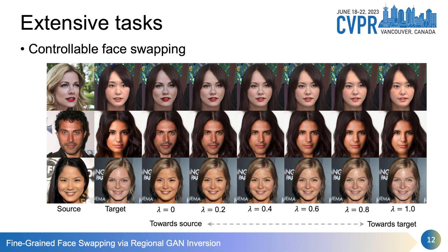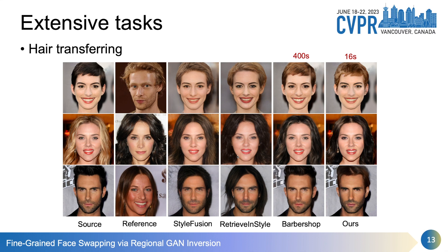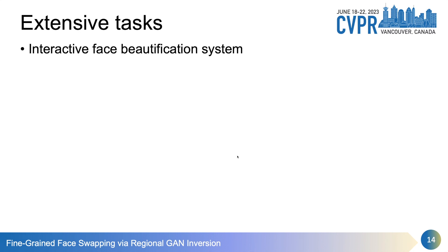Thanks to the flexibility of our method, we apply it to some extensive tasks. The first is controllable face swapping — not only the fully swapped face, but we can also get intermediate faces with a hyperparameter lambda that controls the swapping extent. The second is hairstyle transfer: we exchange the texture code of the hair region. Compared with state-of-the-art methods, both Barbershop and ours look realistic, but our method is more than 20 times faster than Barbershop. Interestingly, other than hair color, the curly degree and splitting point are also captured by our texture code. Finally, we developed an interactive beautification system where users can incrementally edit the face until satisfaction.